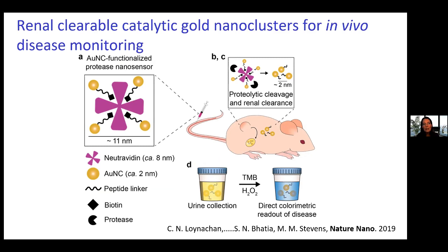The assay has different components. We have a carrier protein — in this case nutravidin, about 8 nanometers in diameter — which can bind to four biotin groups. The biotin groups are on the end of peptide linkers that have a very small gold nanocluster at the other end of the peptide. The whole assembly is about 11 nanometers. If you inject this into a mouse, it is too big to come out through the kidney in that assembled form.